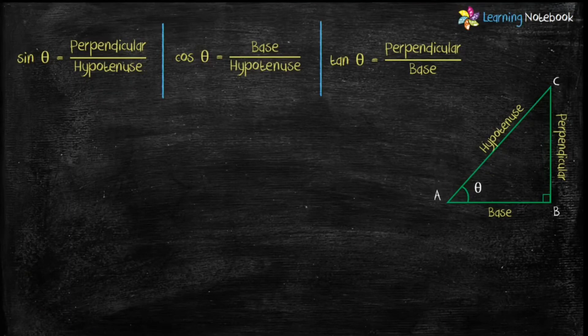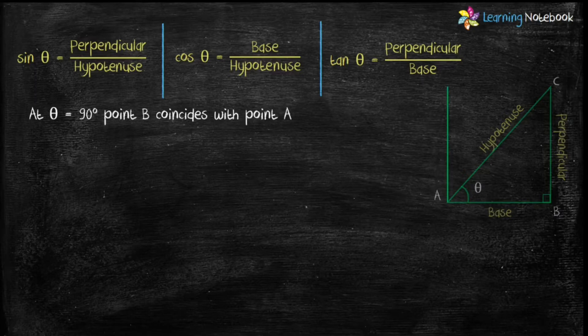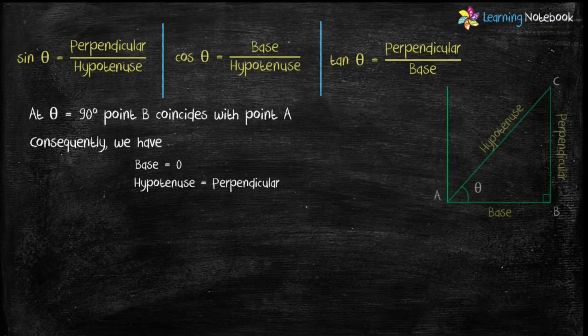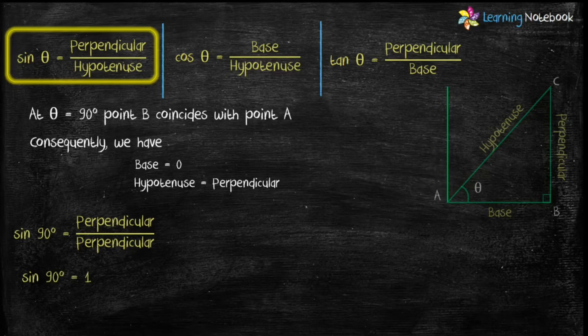Now let's find the trigonometric ratios at theta equals 90°. As theta increases, line segment AB becomes smaller and smaller, and finally when theta becomes 90°, point B coincides with point A. Consequently, at theta equals 90°, base equals 0 and hypotenuse equals perpendicular. Putting these values into sin theta equals perpendicular upon hypotenuse, we get sin 90° equals perpendicular upon perpendicular, which equals 1.